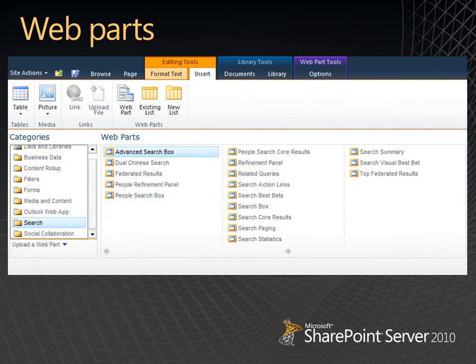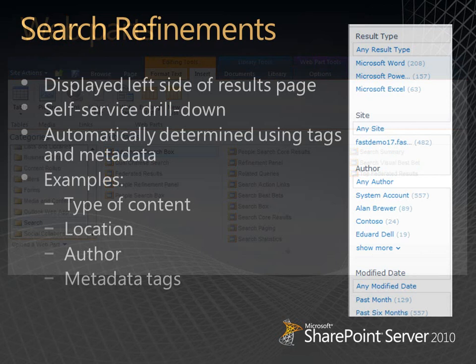Here's an example of the various search web parts that are available. When you create a search center, it's pre-configured with all of these web parts ready to go. If you put the search center into edit mode, you can see all the web parts in their zones, and you can edit and modify them to change settings and get different search behavior. It's also possible to drop any of these web parts onto any page with a web part zone to create a custom search experience.